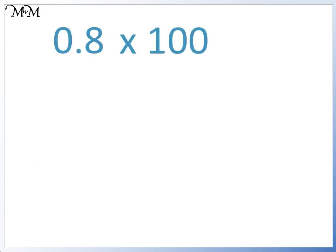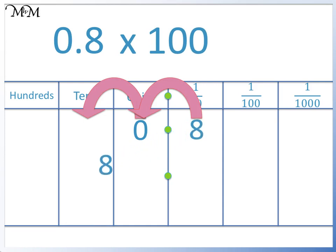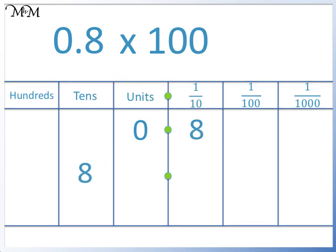Here we have 0.8 times 100. When we multiply by 100, we move each digit two places to the left. Because the units column is worth zero, we can start with the 8. We move it two places to the left. There is a space in the units column, so we write in a zero. 0.8 times 100 equals 80.